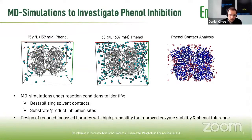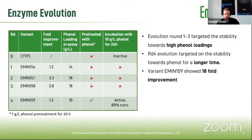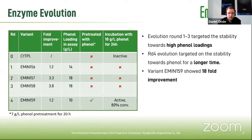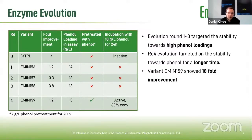We designed focused libraries, and in the first round we only got a 1.2-fold improvement. But as it is oftentimes with enzyme evolution rounds, you don't have a linear increase but more an exponential increase. So in the later rounds, one gets much higher fold-increase improvements.